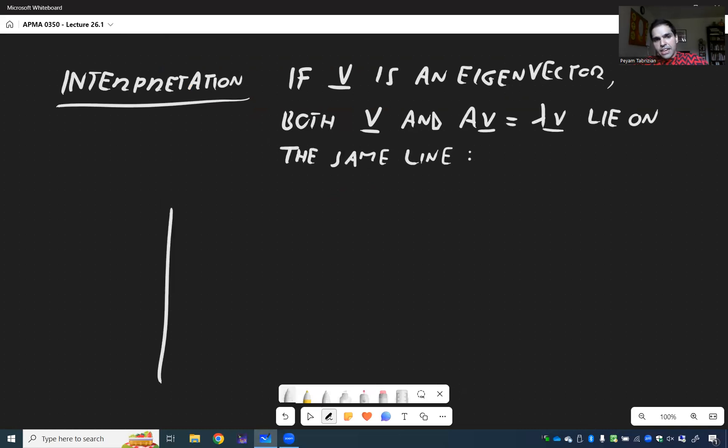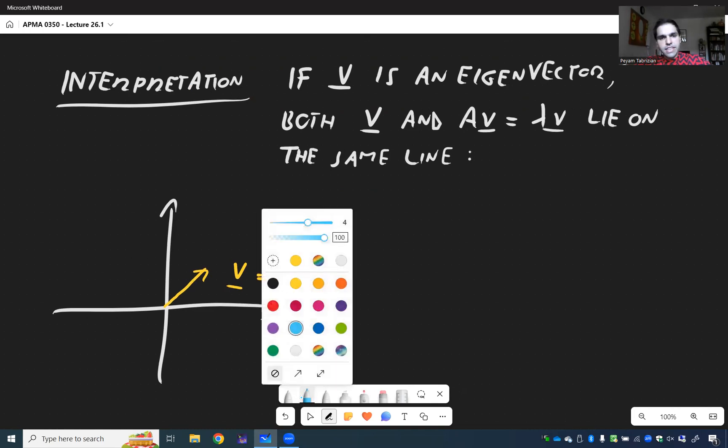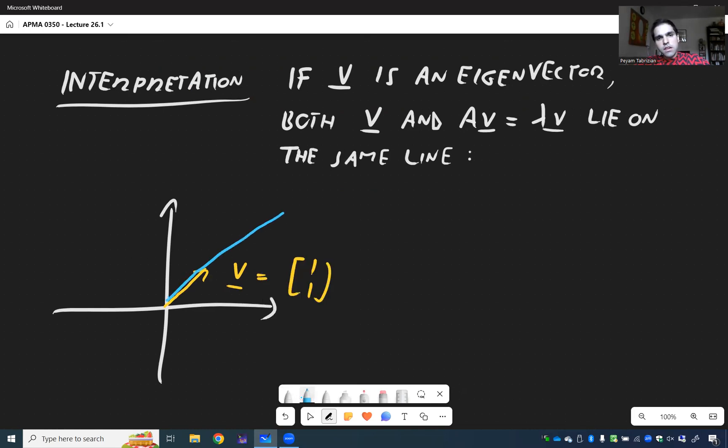Because if you have an eigenvector, say in this case, we had V which was 1, 1, and AV which was 7, 7. Then notice they do lie on the same line. So this is the case of eigenvector.